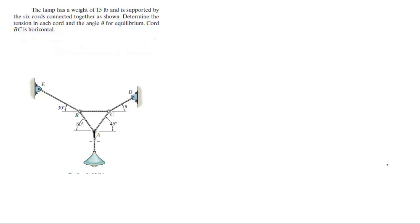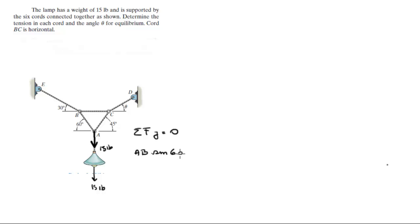The tension from the weight of the lamp is equal to 15 pounds. The sum of the forces in the Y is equal to 0, so AB sine of 60 plus AC sine of 45 minus 15 is equal to 0. This gives us 0.866 AB plus 0.707 AC is equal to 15.